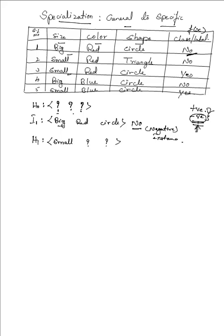Since we have a negative instance 'no,' I cannot copy H0 itself for H1. Instead of big, I replace with small. The instance has red color, so I take the opposite — blue. The instance has circle for shape, so I take the opposite — triangle. So the three hypotheses are: (small, ?, ?), (?, blue, ?), and (?, ?, triangle).